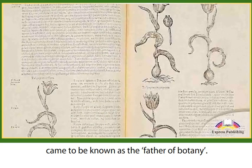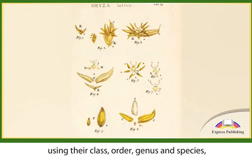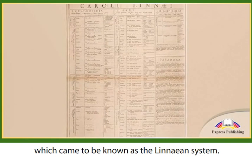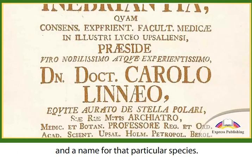In the 18th century, Carl Linnaeus, a Swedish botanist, became the father of modern taxonomy. He changed the way organisms were classified using their class, order, genus, and species, which came to be known as the Linnaean system. He also introduced a standardized binomial naming system, using a two-part scientific name made up of the genus and a name for that particular species.